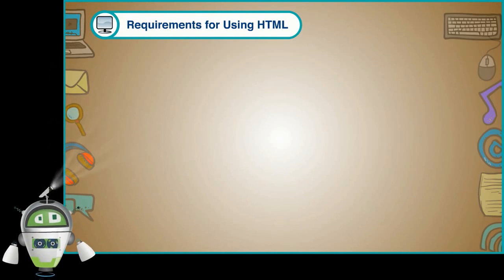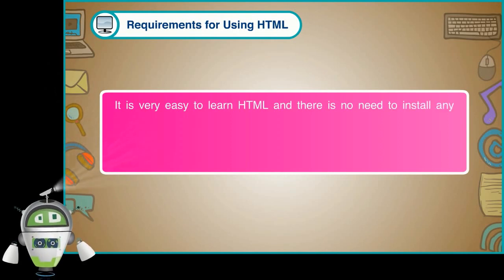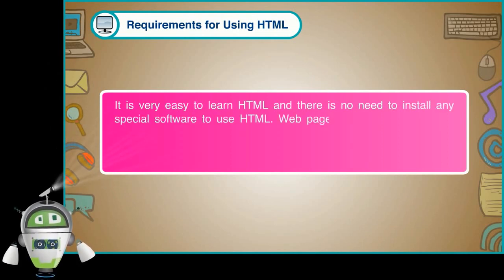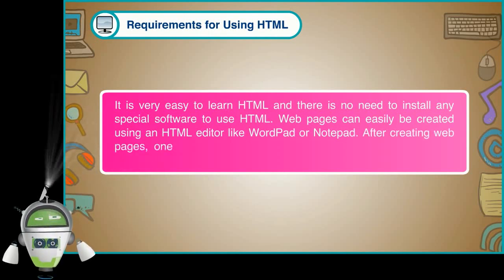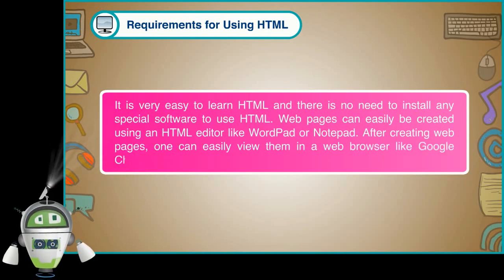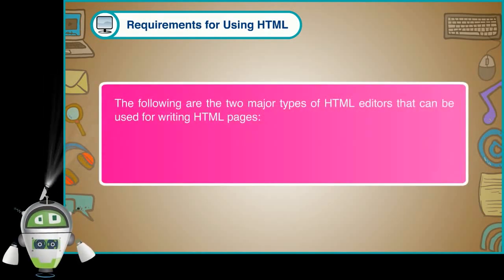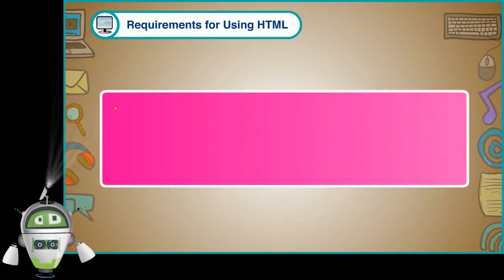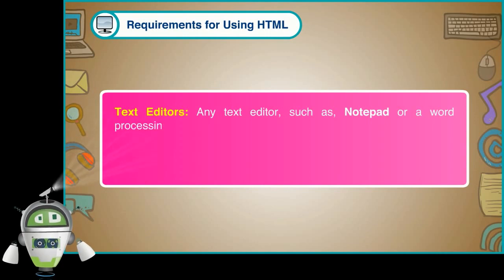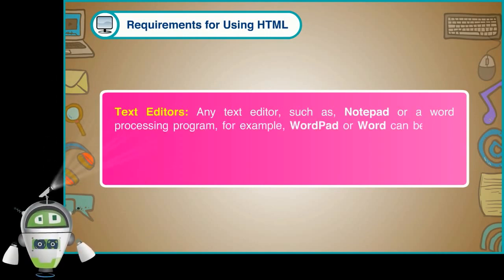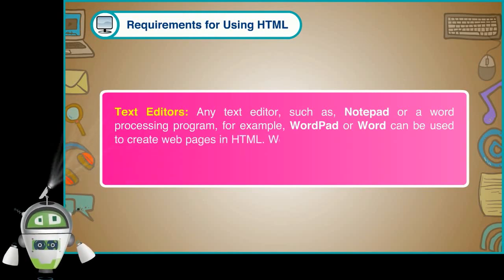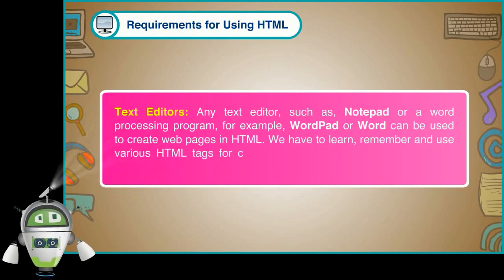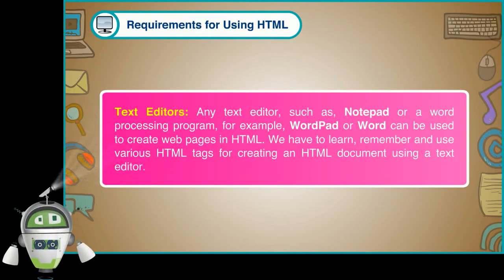Requirements for using HTML: It is very easy to learn HTML and there is no need to install any special software. Web pages can easily be created using an HTML editor like WordPad or Notepad. After creating web pages, one can easily view them in a web browser like Google Chrome, Microsoft Edge, or Mozilla Firefox. There are two major types of HTML editors: text editors or word processors, and WYSIWYG editors. Any text editor such as Notepad, or a word processing program like WordPad or Word, can be used to create web pages in HTML. We have to learn, remember, and use various HTML tags for creating an HTML document using a text editor.